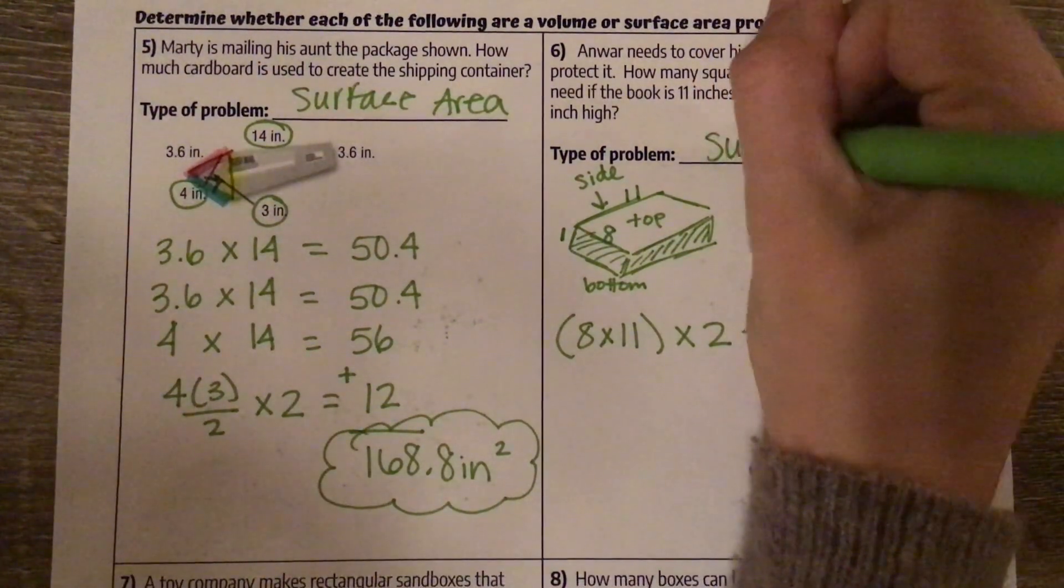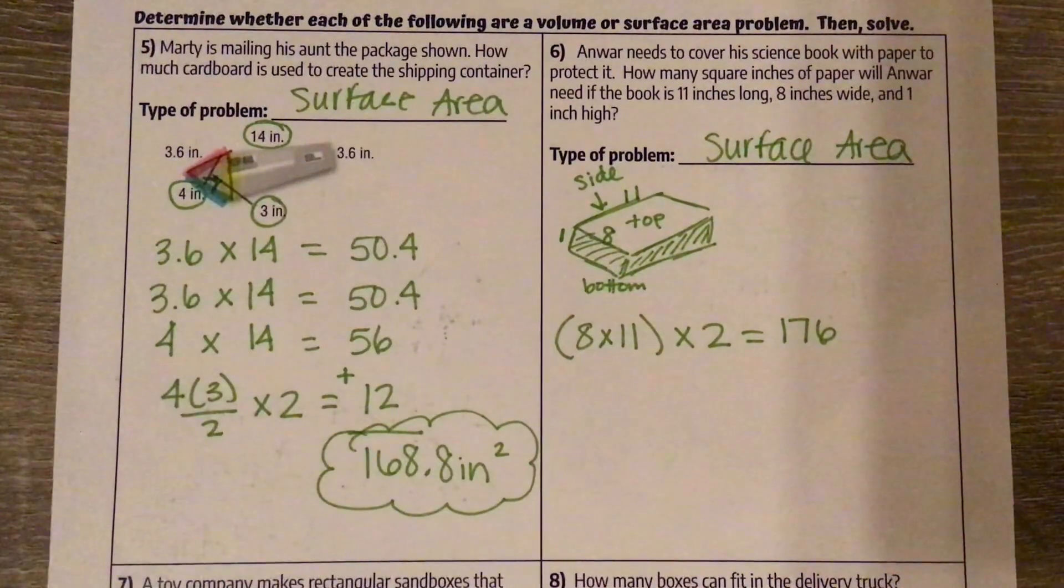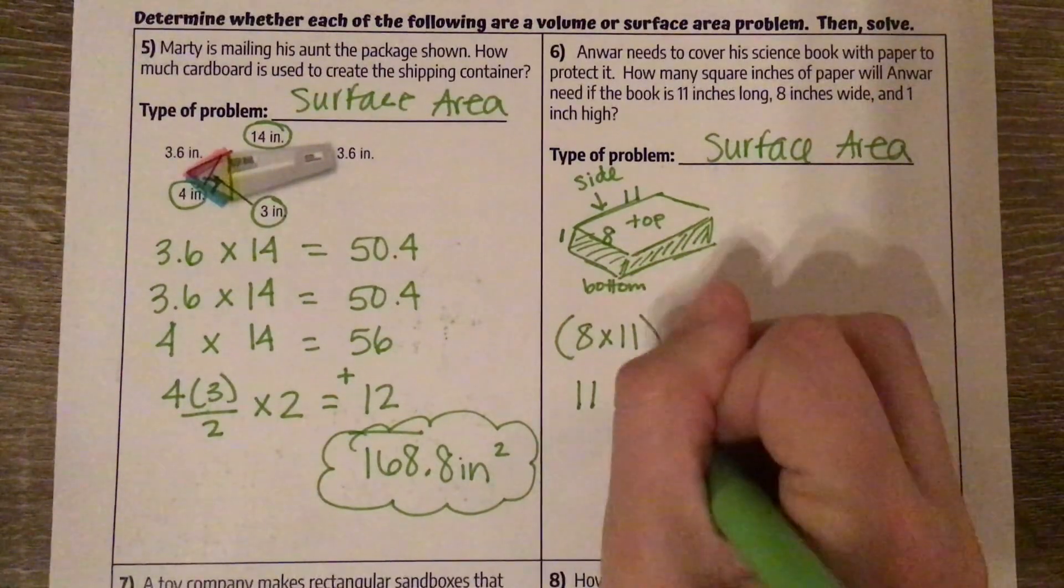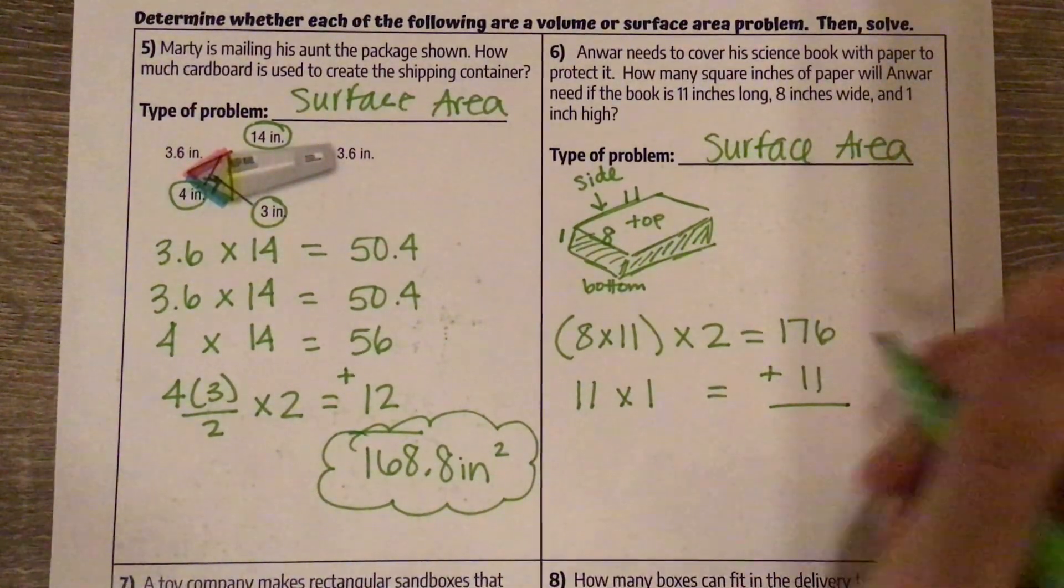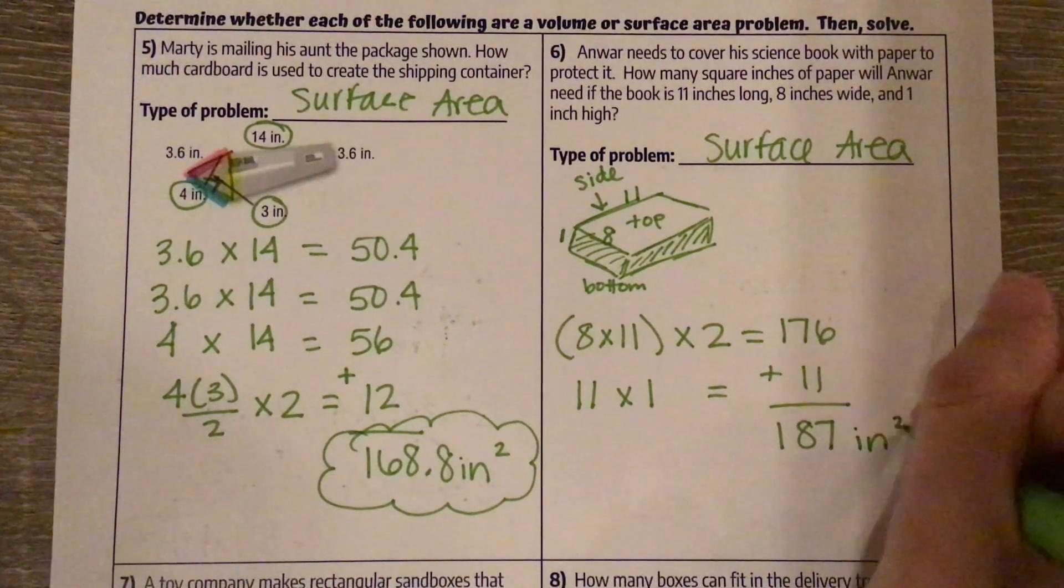This is a surface area problem. And then we just want this back side, which is 11 by 1. And then we are adding those two together. We get 187 inches squared.